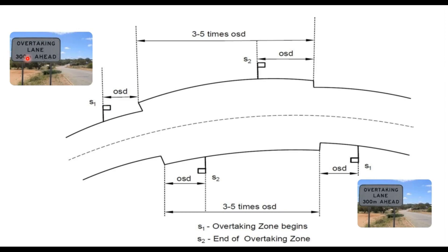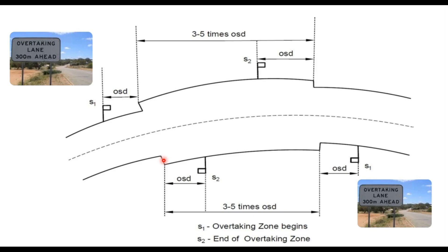The overtaking sight distance is 300 metres. One OSD before the end of the overtaking zone, the driver is informed by a sign that the overtaking zone is ending. The same applies for traffic coming from the other direction: an information sign is provided one OSD before the start of the overtaking zone, and another sign one OSD before the end of the overtaking zone. To determine the length of the overtaking zone, we must know the overtaking sight distance.